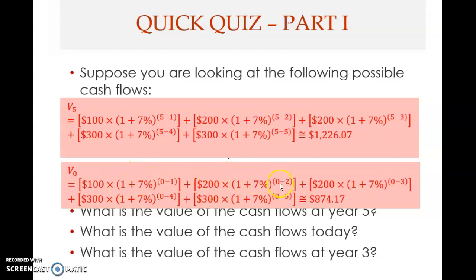The 200 is discounted over two years — negative two means you discount at seven percent for two years. The next is negative three, then negative four, and negative five. When you sum them all, they are all now in present value so you can add them. You get eight hundred and seventy-four dollars and seventeen cents — that is the present value.